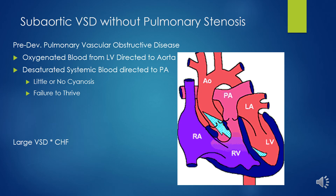For DORV with subaortic or doubly committed VSD without pulmonary stenosis, repair should occur before 6 months to prevent development of pulmonary vascular disease. Repair uses a right intracardiac baffle of prosthetic material such as Dacron or autologous pericardium to direct blood from the VSD to the aortic annulus. The VSD may need anterior-superior enlargement to avoid the conduction system. To prevent RVOT obstruction from the baffle, the distance between the tricuspid annulus and pulmonary valve must equal or exceed the aortic annulus; otherwise, outflow patch augmentation may be necessary.